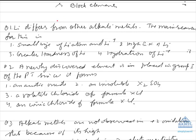S-block elements are those in which the s orbital is in the process of filling — that is, the differentiating electron enters into the ns orbital. The s orbital can accommodate at most two electrons, so in the s block there are two groups: Group 1 and Group 2.